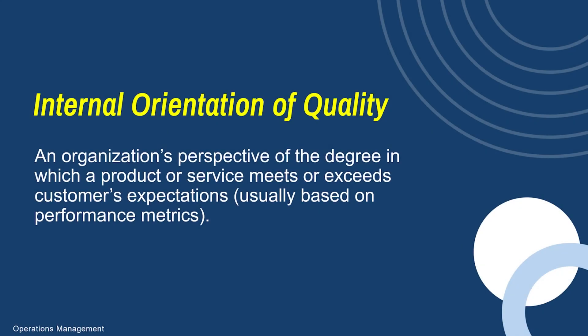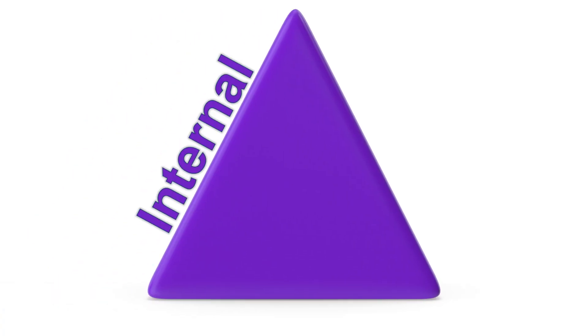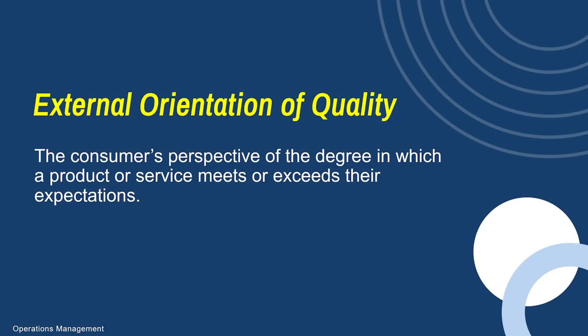The internal orientation of quality is the company's perspective of their quality — how well they're doing or how well they believe their product has been made. The external orientation of quality is the consumer or customer's perspective of the quality of that product.